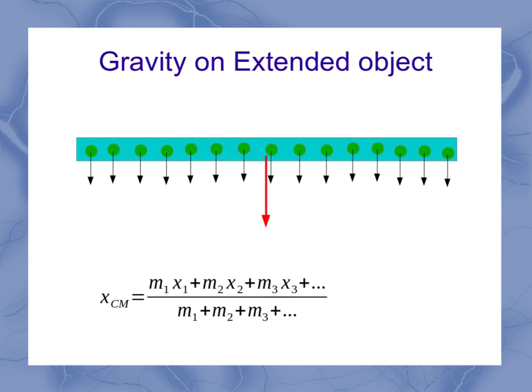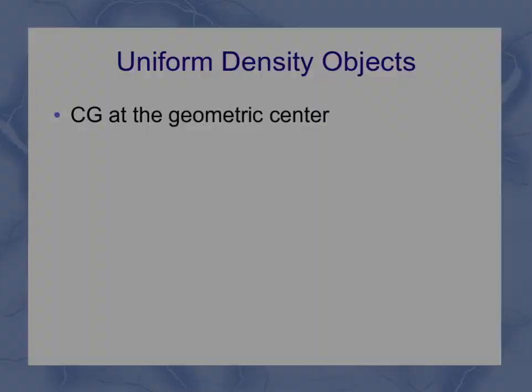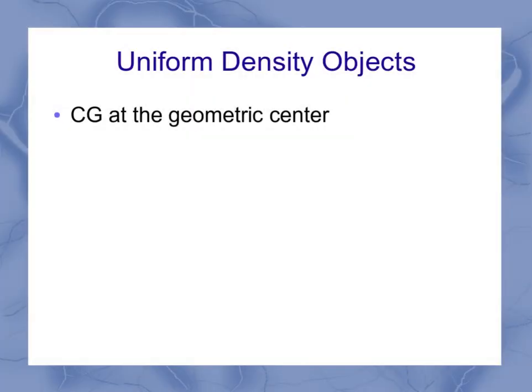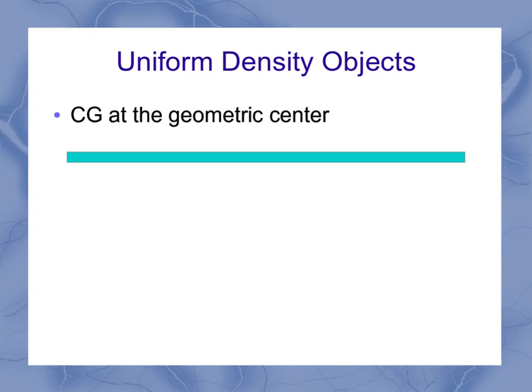We're not going to spend a lot of time on the formula here. But this average point is our center of gravity. Now most of the time we're going to be using uniform density objects, like a long rod or a flat board or something like that. The center of gravity for these types of objects is always at the geometric center.